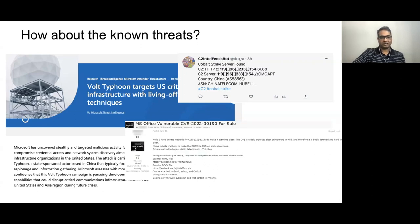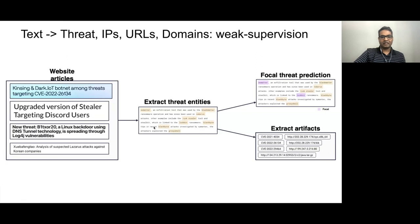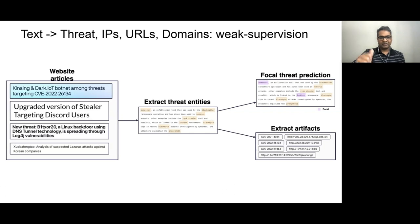This is where entity extraction from text comes in — something many people here will recognize. We look at all these articles and detect what threats are being discussed, and from those articles we also find what artifacts to look for in the network: what IPs these threats reach out to, what URLs and domains. This is discussed many times in relation to weak supervision, and we use the same techniques to extract that information and make our process more efficient.